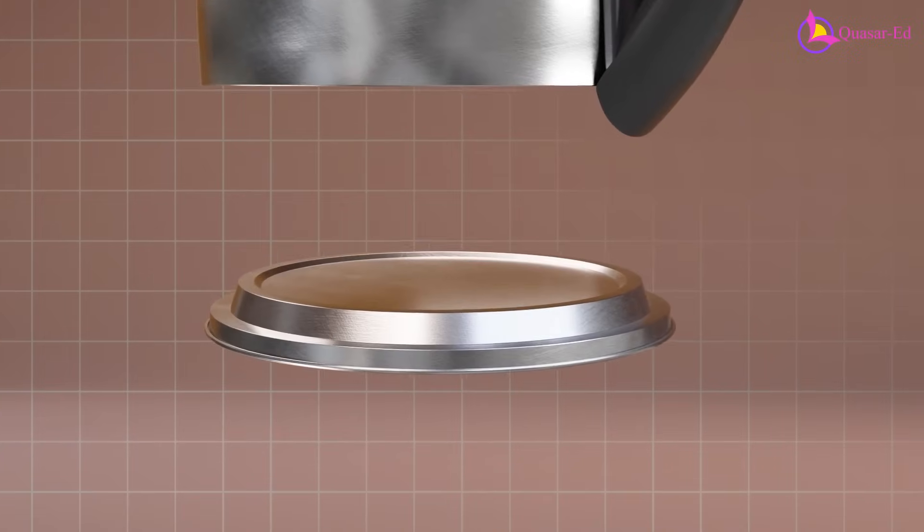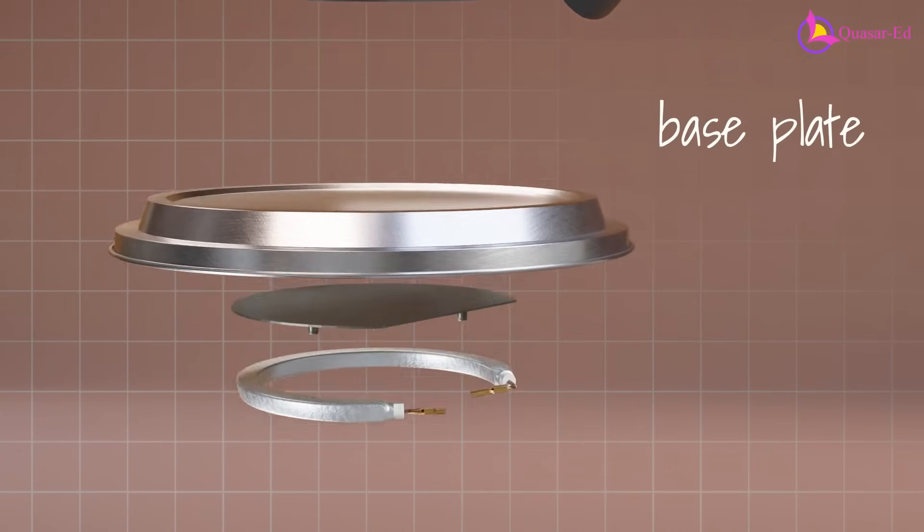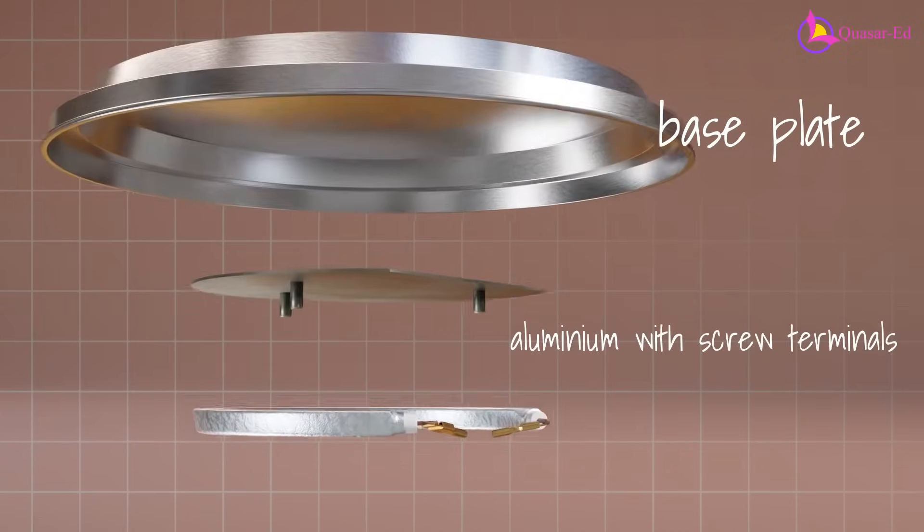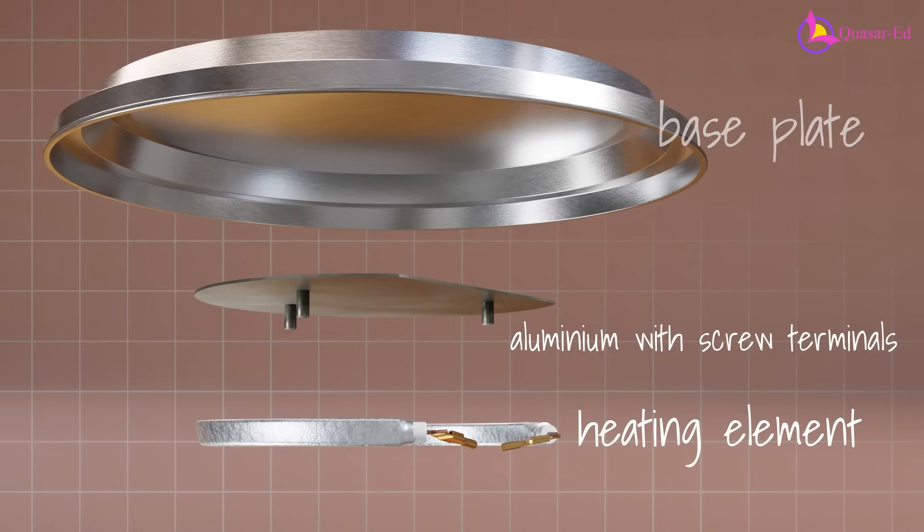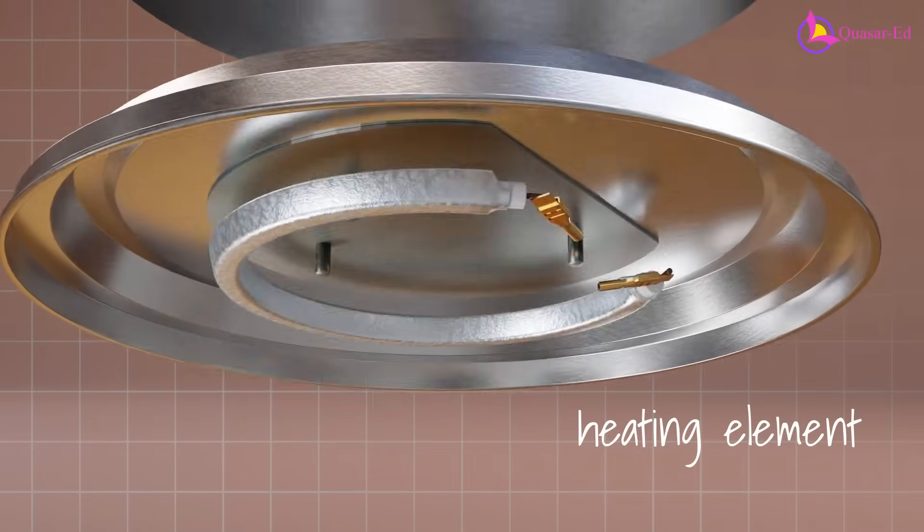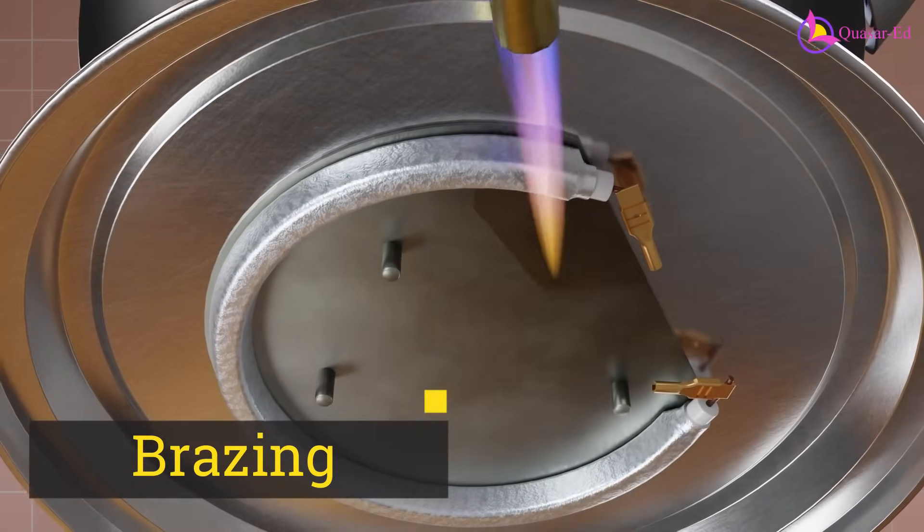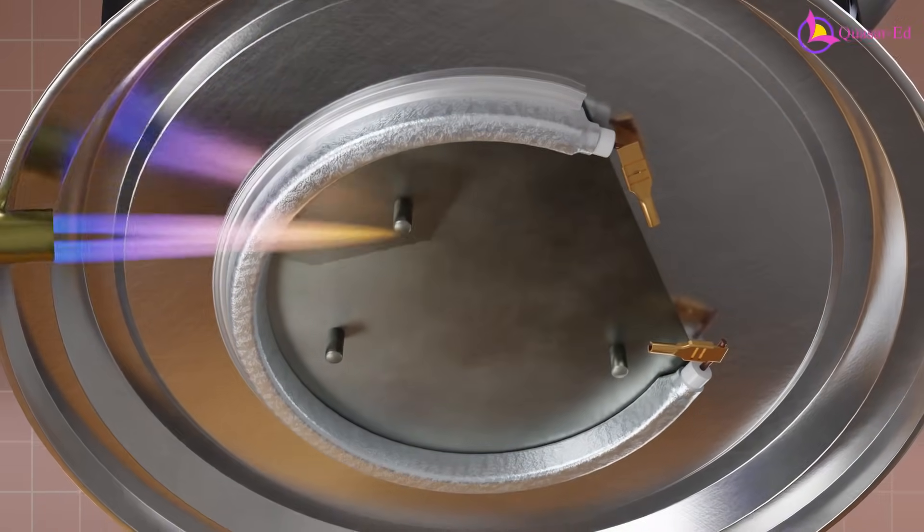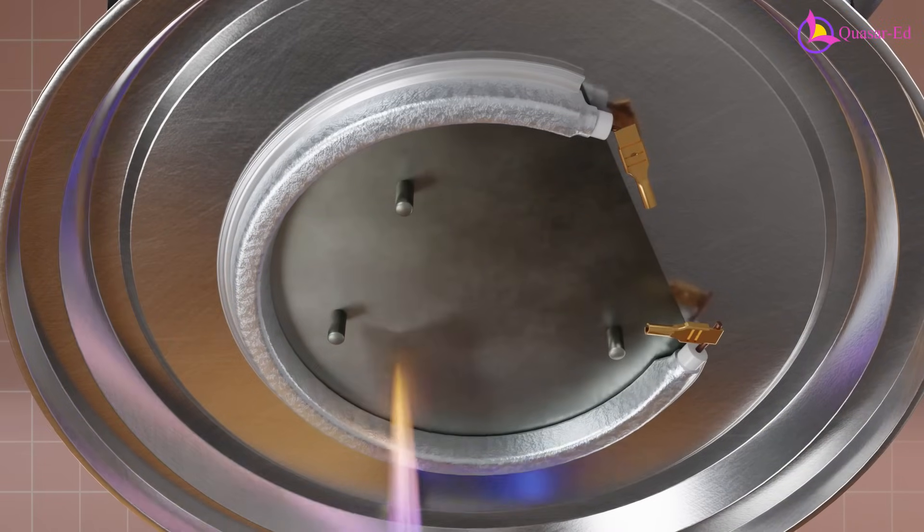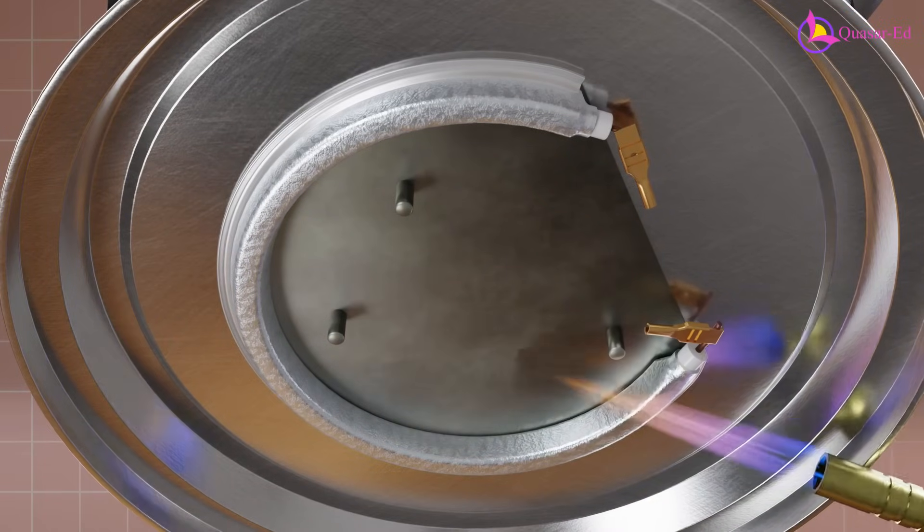The kettle's heating plate consists of three parts: a kettle base plate, aluminum with screw terminals, and heating elements fused together through a process called brazing, where aluminum melts and flows between the heating element and the base plate, creating a strong bond.